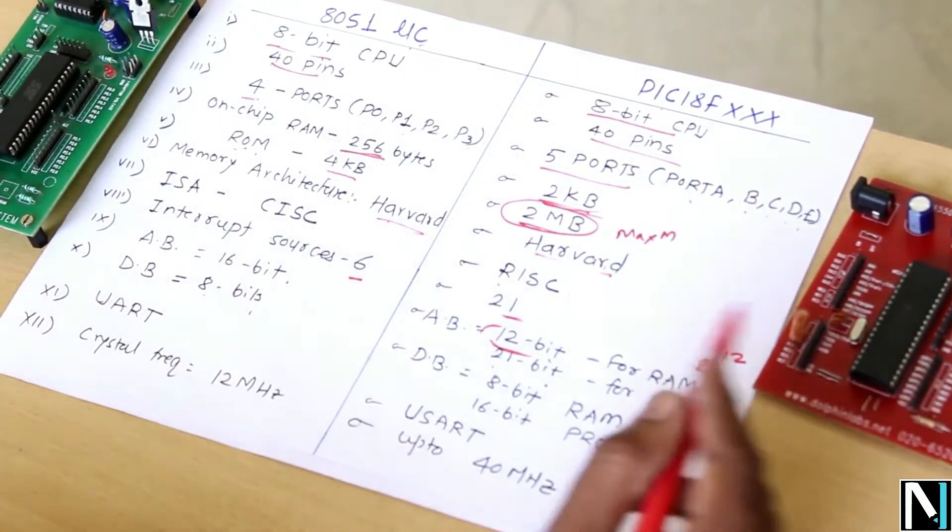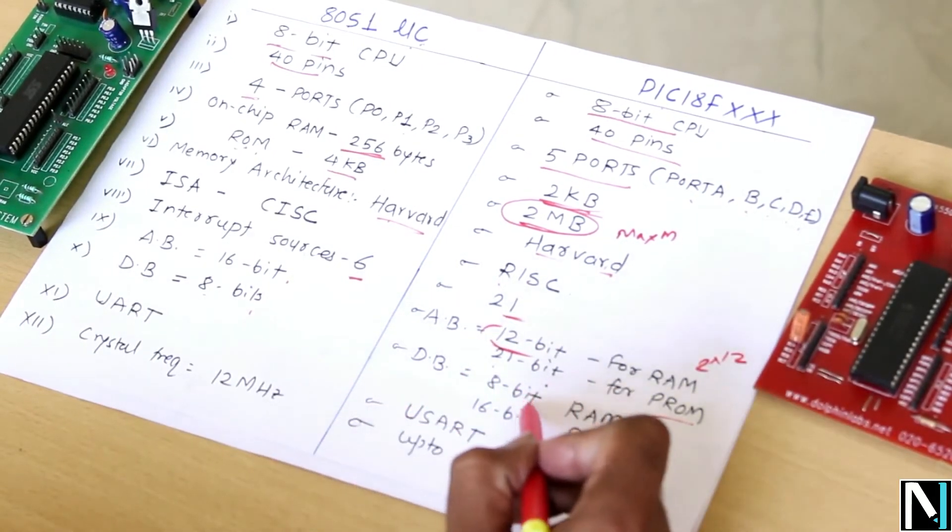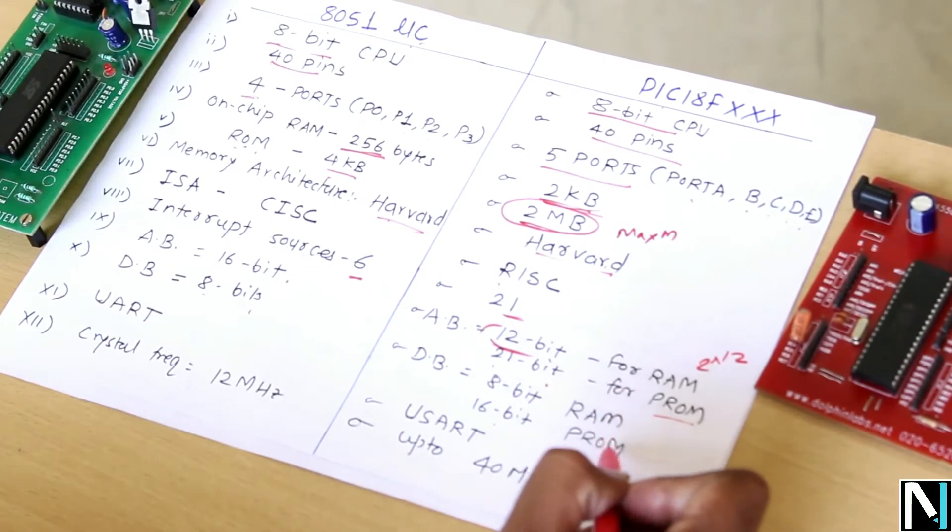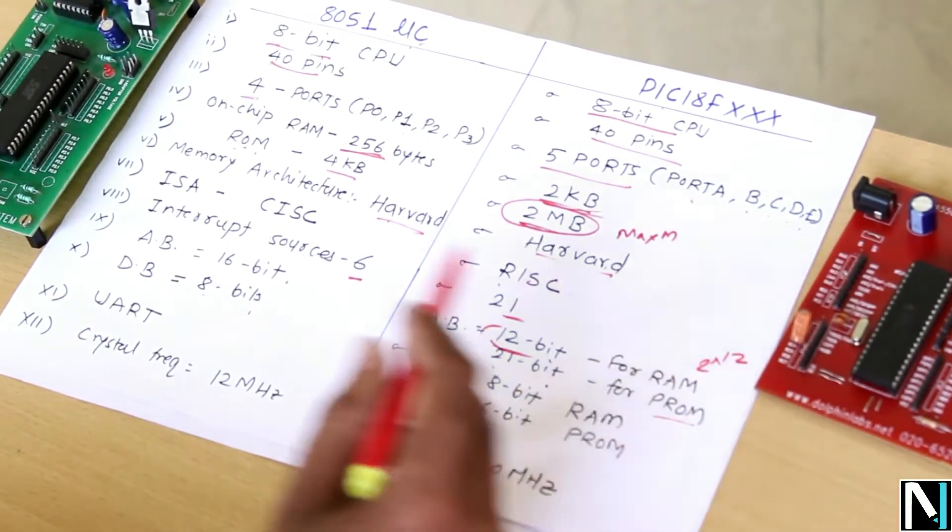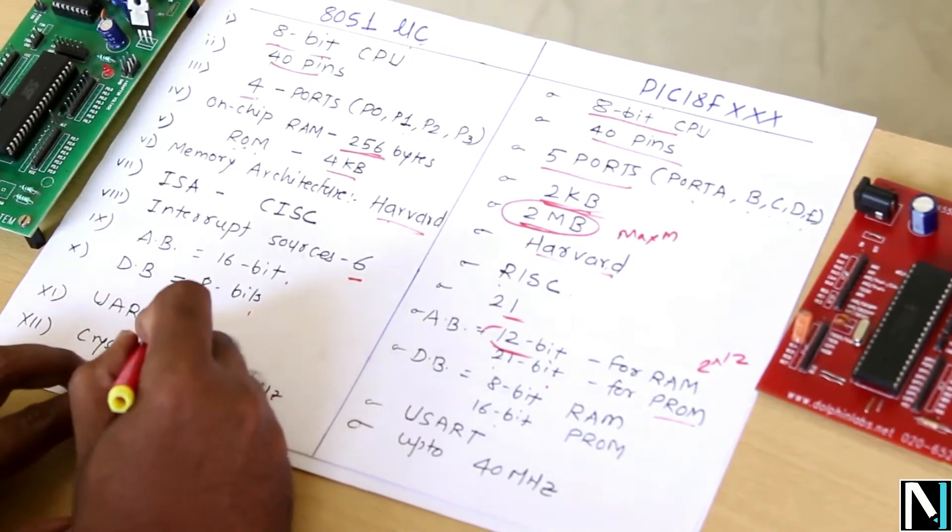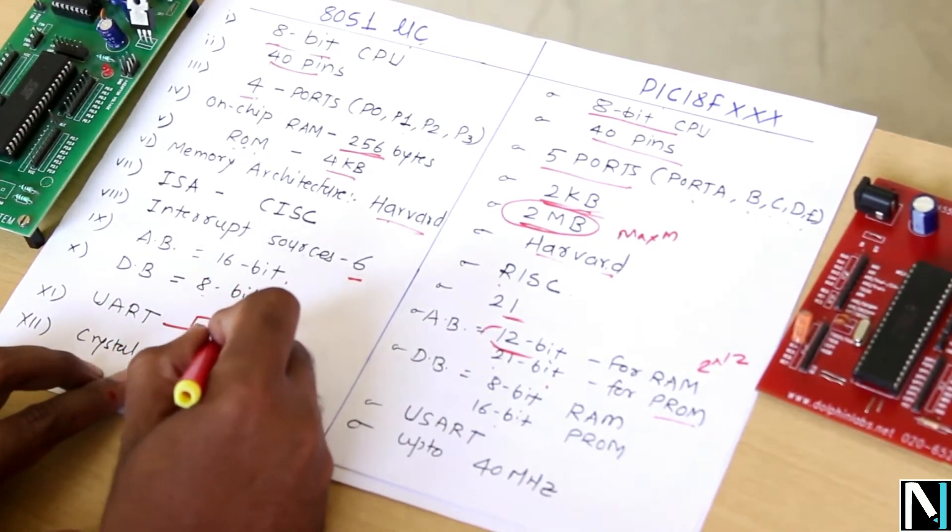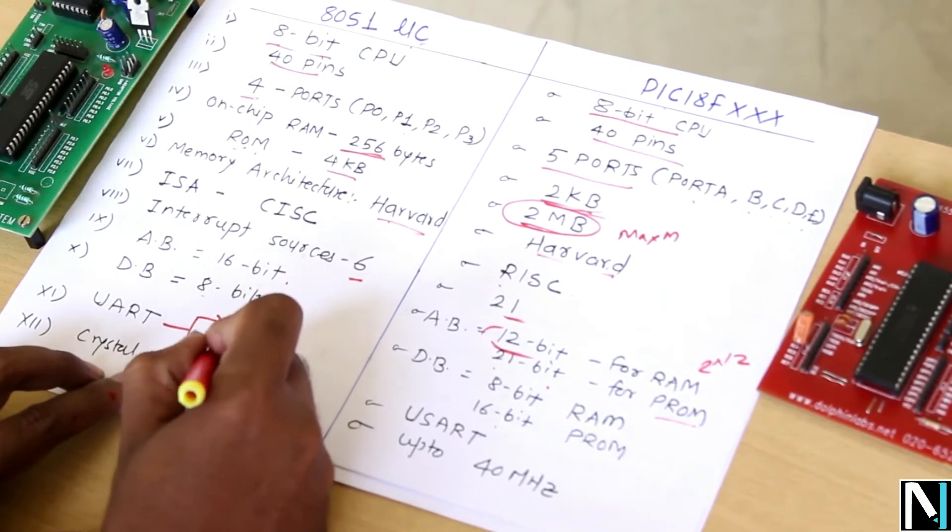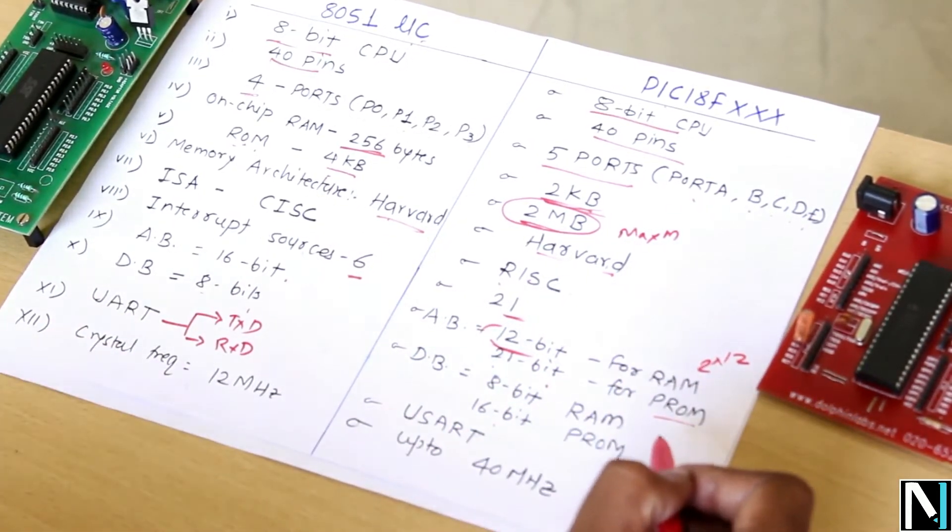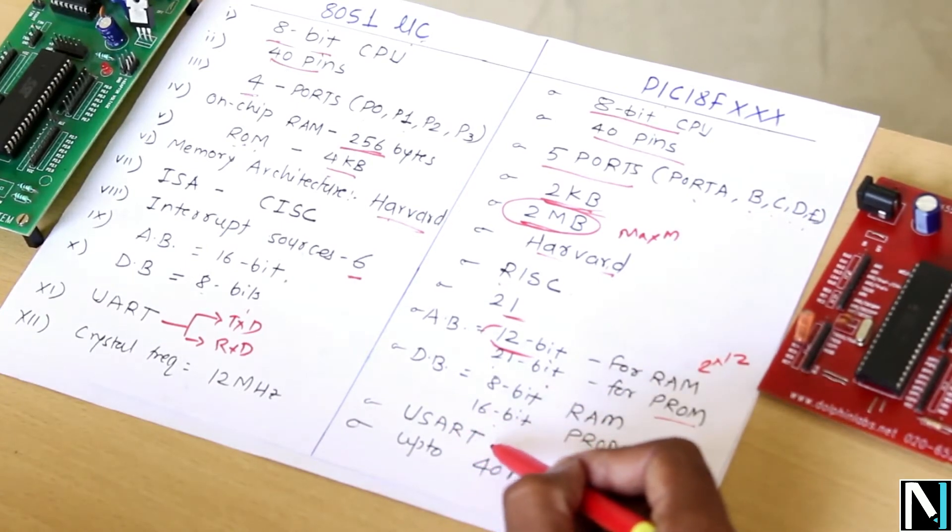Now we will look at the data bus. So data bus is 8-bit for the data RAM and 16-bit data bus for the program ROM. It has UART circuitry - Universal Asynchronous Receiver Transmitter circuitry for serial communication of the data. And it has TXD and RXD line. Similarly, in PIC 18F we are having Universal Synchronous Asynchronous Receiver Transmitter circuitry.